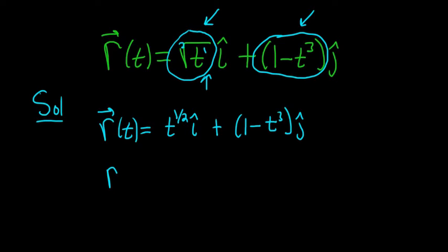Now we'll take the derivative, so r prime of t. To take this derivative here, we use the power rule. You put the 1 half in the front, so you bring it down, and then you do 1 half minus 1. So 1 half minus 1 is negative 1 half. And then don't forget the i hat.